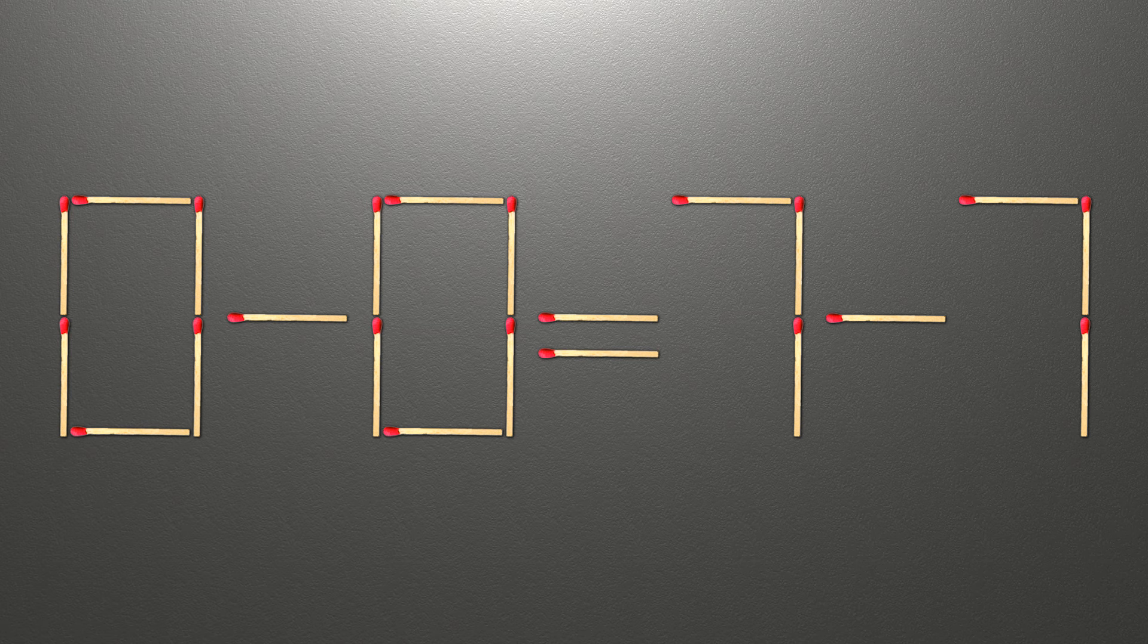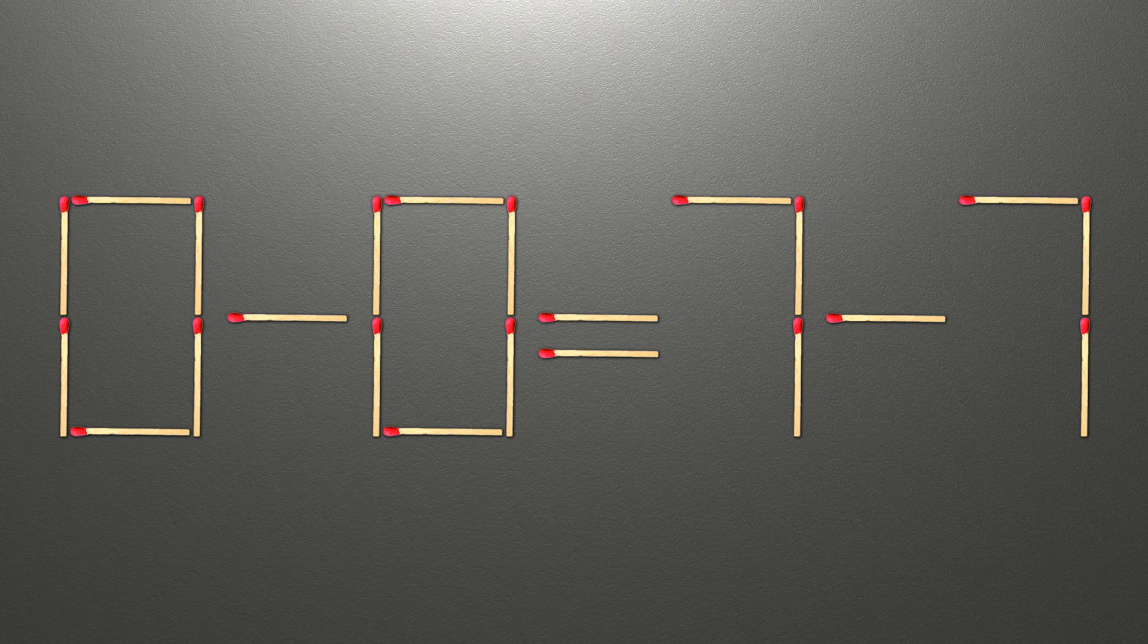Now, when we check the condition, 0 minus 0 is 0 and 7 minus 7 equals 0. Now our equality is correct. The task is done and the puzzle is solved.